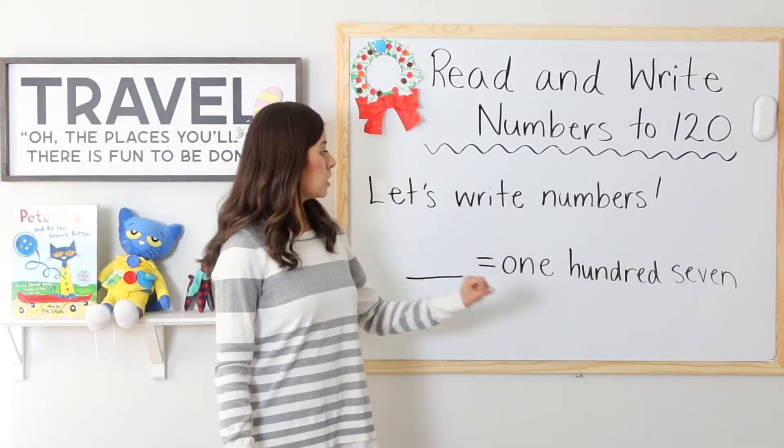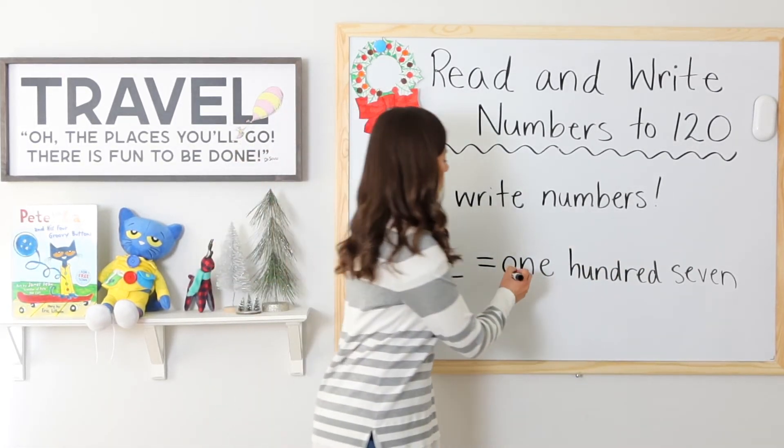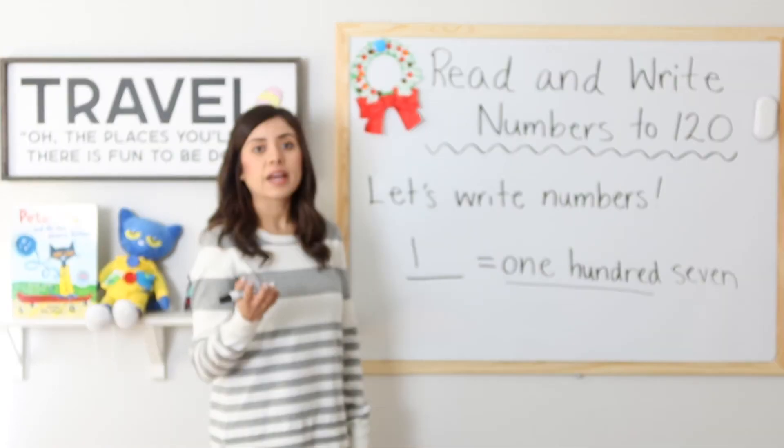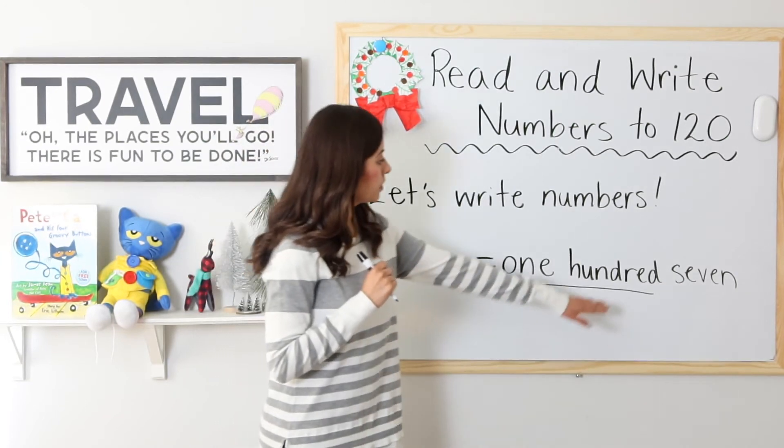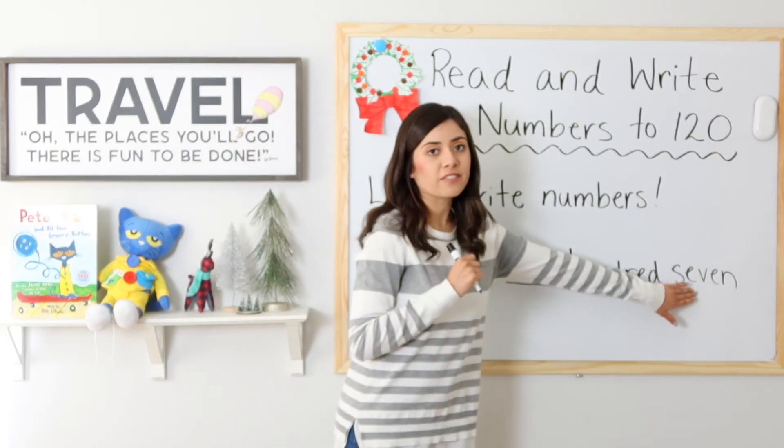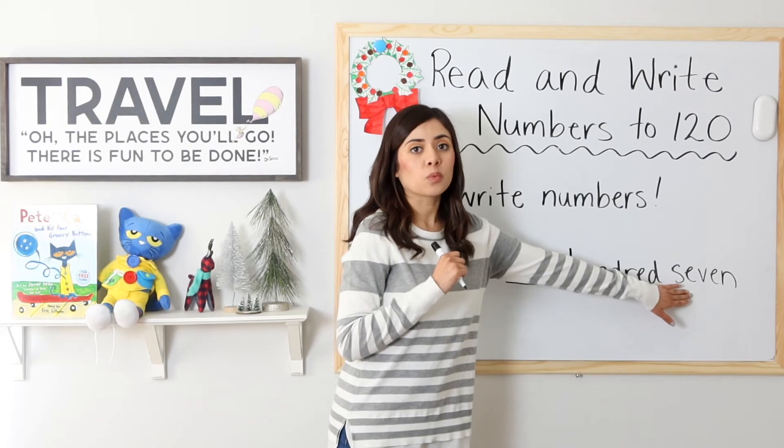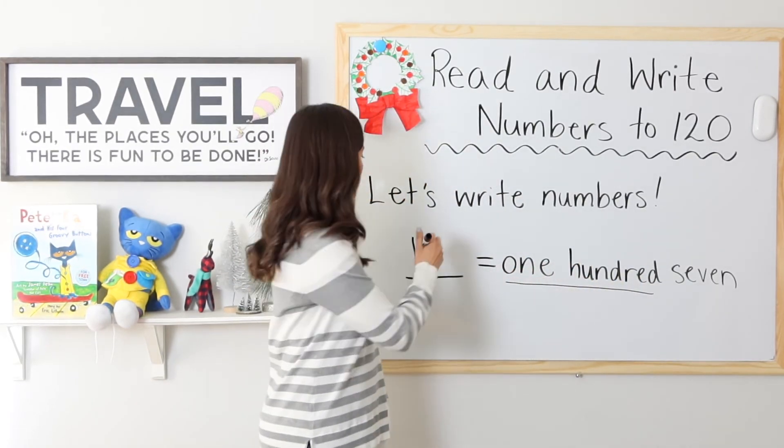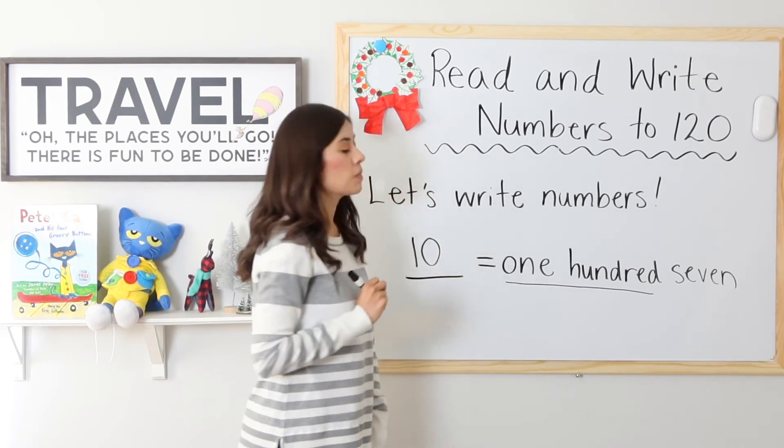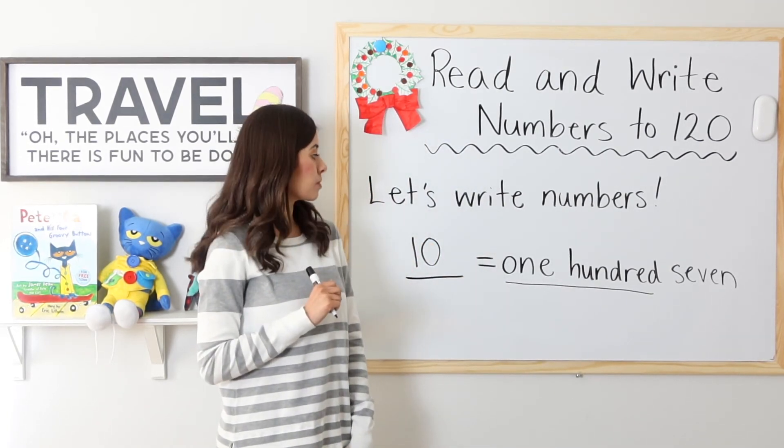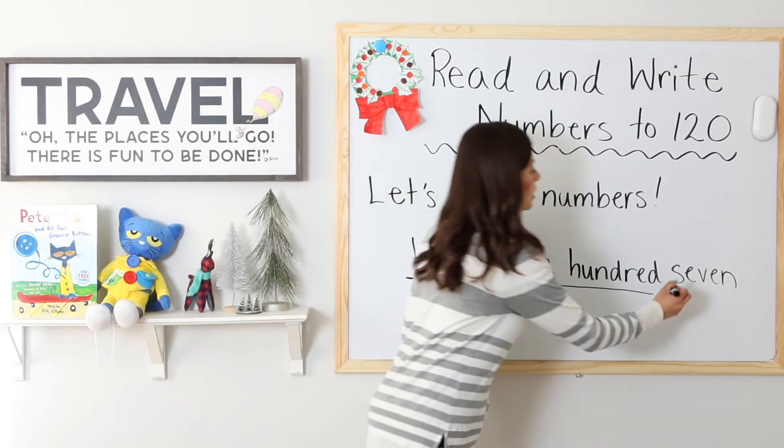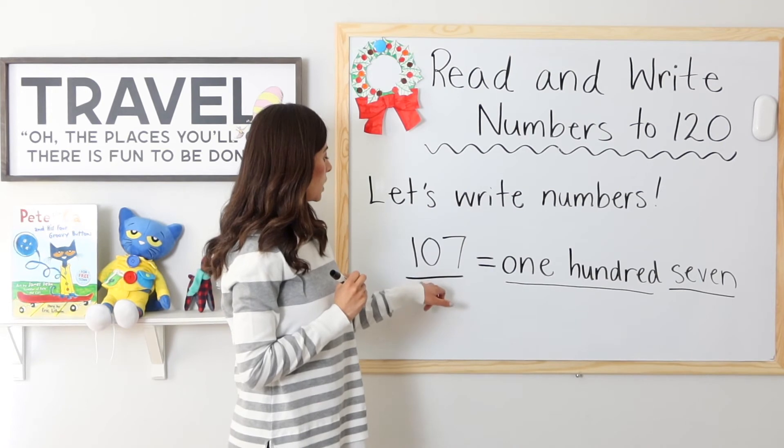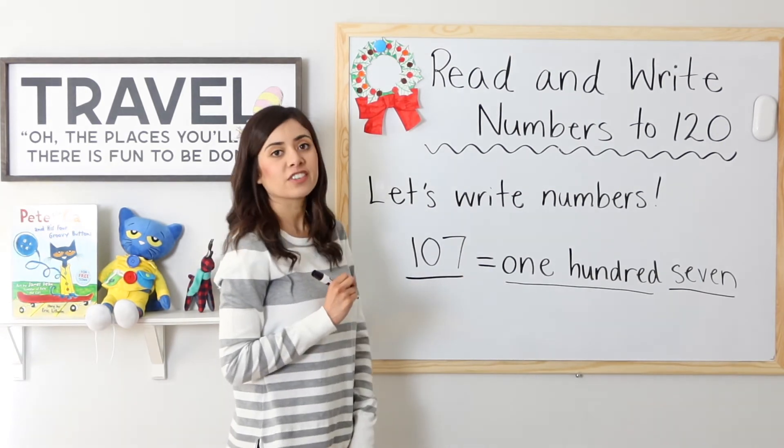107. So how many hundreds? 100. So let's put a one in the hundreds place. How many tens? Well, it says seven. And seven is a number that goes in the ones place. So I do not have any tens. I will fill in zero because I have zero tens. How many ones? Seven. Seven in the ones place. That's 107. Very good.